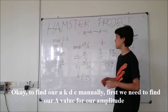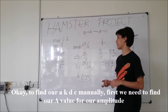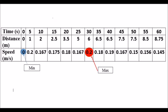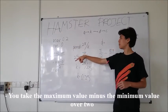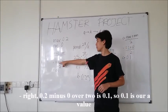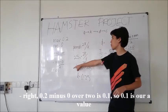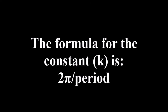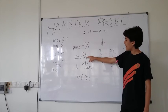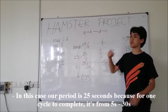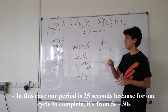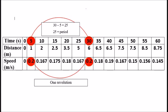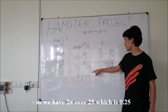Okay so to find our a, k, d, c manually first we need to find our a-value for our amplitude. So you take the maximum value, which in our case is 0.2, and the minimum value, which is 0. And you take the maximum value minus the minimum value over 2. So 0.2 minus 0 over 2 is 0.1. So 0.1 is our A value. For our K value, we take the period, which is 2 pi over K. In this case, our period is 25 seconds, because for one cycle to complete, it's from 5 to 30. So 30 minus 5 is 25. So we have 2 pi over 25. Our K is 0.25.